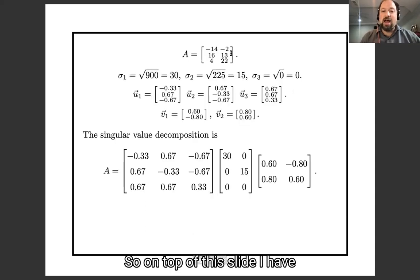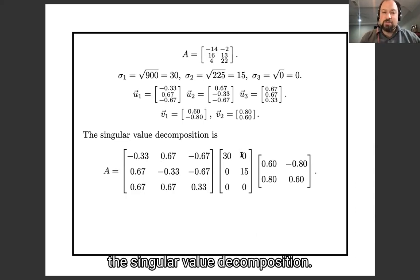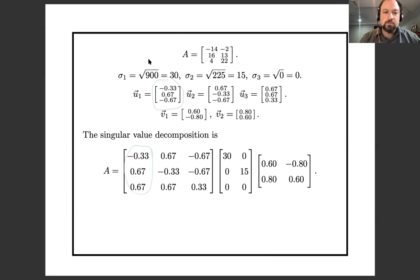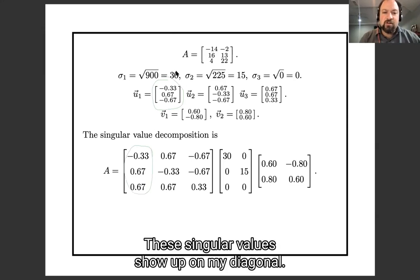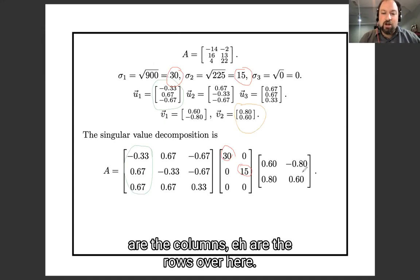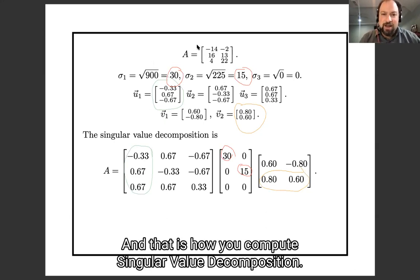So at the top of this slide, I have recorded everything we've done so far, and now I've put it together to get the singular value decomposition. So these U vectors show up over here, these singular values show up on my diagonal, and these V vectors are the rows over here. And that is how you compute singular value decomposition.